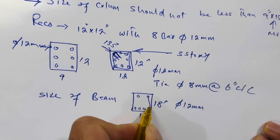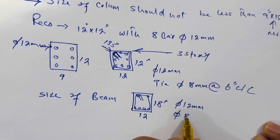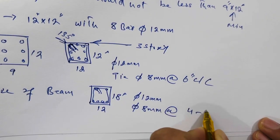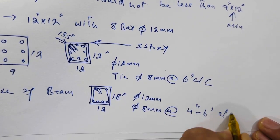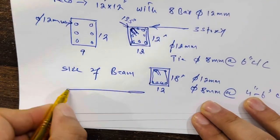Next, you can see the stirrups. So the diameter should be 8 millimeter with the spacing of 4 to 6 inches center to center.